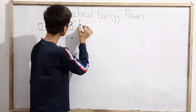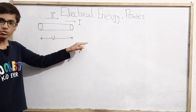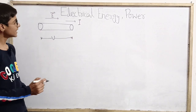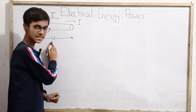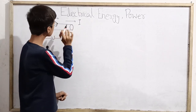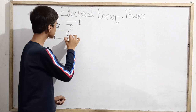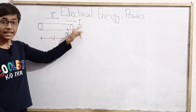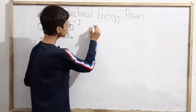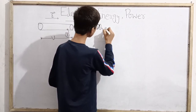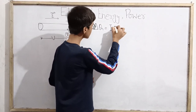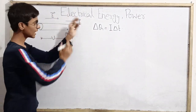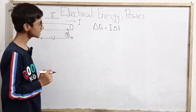Current flows from higher potential to lower potential. If the potential difference is V and we assign a resistance R throughout the conductor, and current I is flowing, then in any time interval delta T, the amount of charge that flows is I times delta T. So in time delta T, a charge of I × delta T flows from one end to the other.